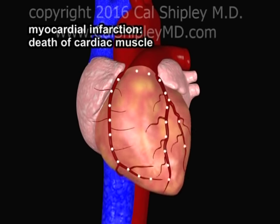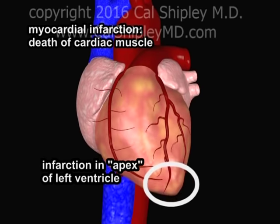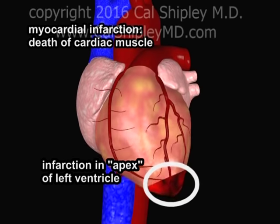The term myocardial infarction means death of cardiac muscle. Because it has the greatest workload of the cardiac chambers, the left ventricle has the largest demand for oxygen and nutrients and therefore is most commonly involved in myocardial infarction.